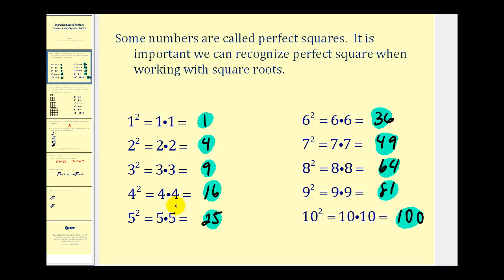Again, if we take an integer and square it, we obtain a perfect square. Another way to think of a perfect square that will help when simplifying square roots is to think of a perfect square as a number that has two equal integer factors.